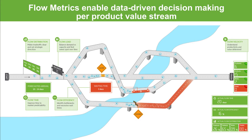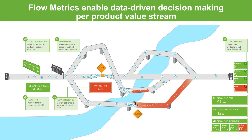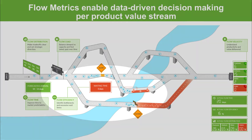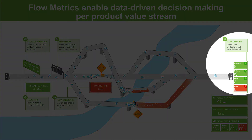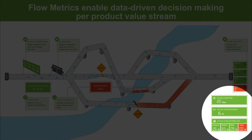Now think of a highway with a given capacity. Based on your software delivery capacity, where should you set the limits on the number of concurrent flow items in progress? At which point are teams slowing down due to too much work in progress? That's flow load. Now think of a traffic jam — based on the proportion of time your flow items are waiting, where are your bottlenecks? That's flow efficiency. And at the end of a reporting period, how many flow items have you actually completed? That's your productivity measure called flow velocity.